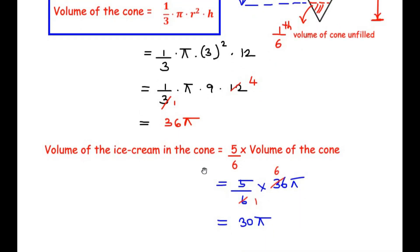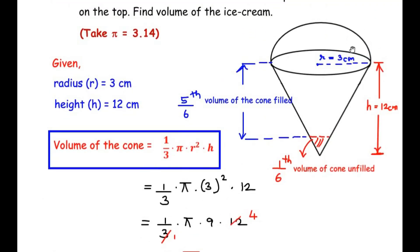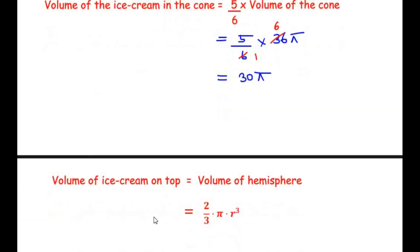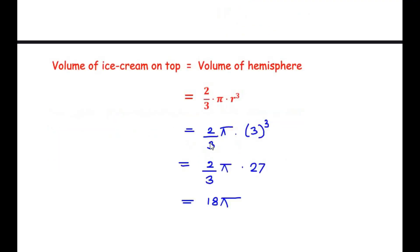The volume of ice cream on top equals the volume of the hemisphere, given by (2/3)πr³. Substituting r = 3 cm: (2/3) × π × 27. Since 27 divided by 3 gives 9, we get 2 × 9π = 18π cm³.